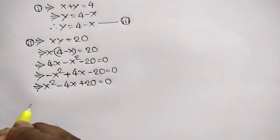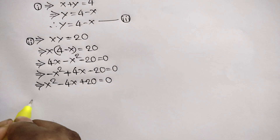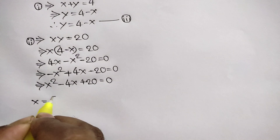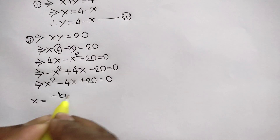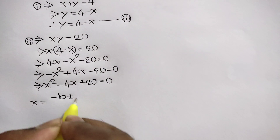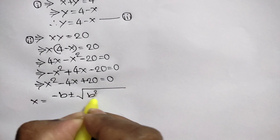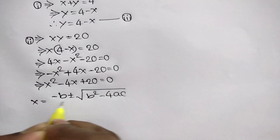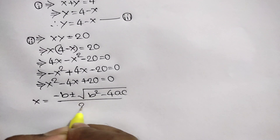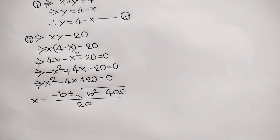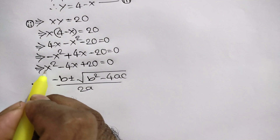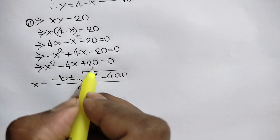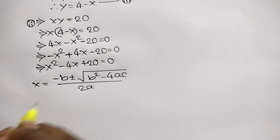Now we can use the quadratic formula. x is equal to negative b plus or minus square root of b squared minus 4ac, all over 2a. Here a is equal to 1, b is equal to negative 4, and c is equal to 20.